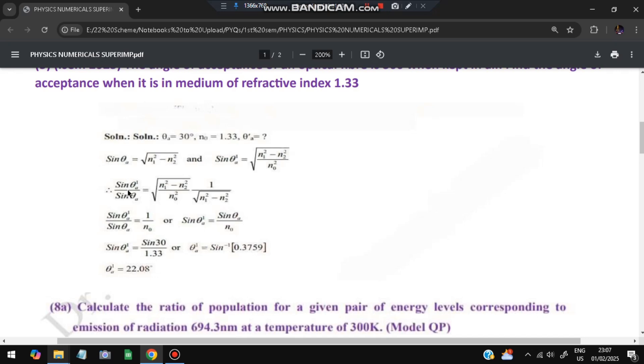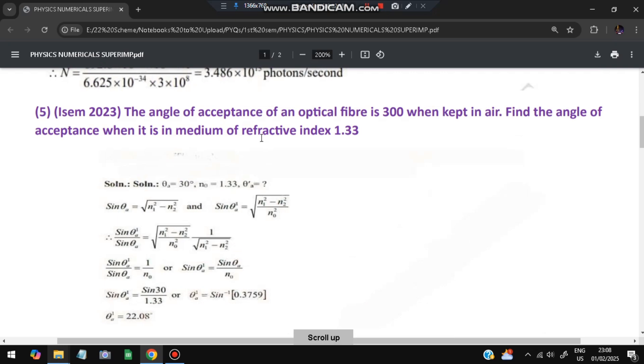When we simplify this, it will be 1/n₀ only, or sin θ_1a = sin θ_a / n₀. The n₀ value is given as the refractive index of that medium, which is 1.33, and θ_a value is given as 30 degrees. We'll substitute sin 30 which is 1/2, we'll be getting a value, and we'll take sine inverse of it. So we'll get 22.08 degrees, which is the value of the angle of acceptance.